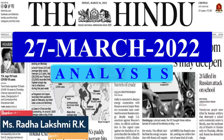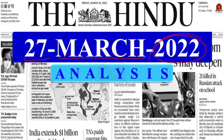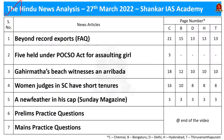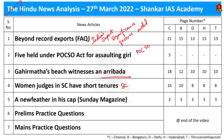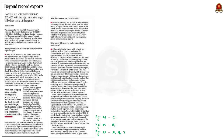Good evening aspirants, welcome to the Hindu newspaper analysis brought to you by Shankaraya's Academy for the date 27th March 2022. Today we have five news articles: India's exports reaching 400 billion US dollars, POCSO Act, the Aribada phenomenon, the Supreme Court, and hornbill species.